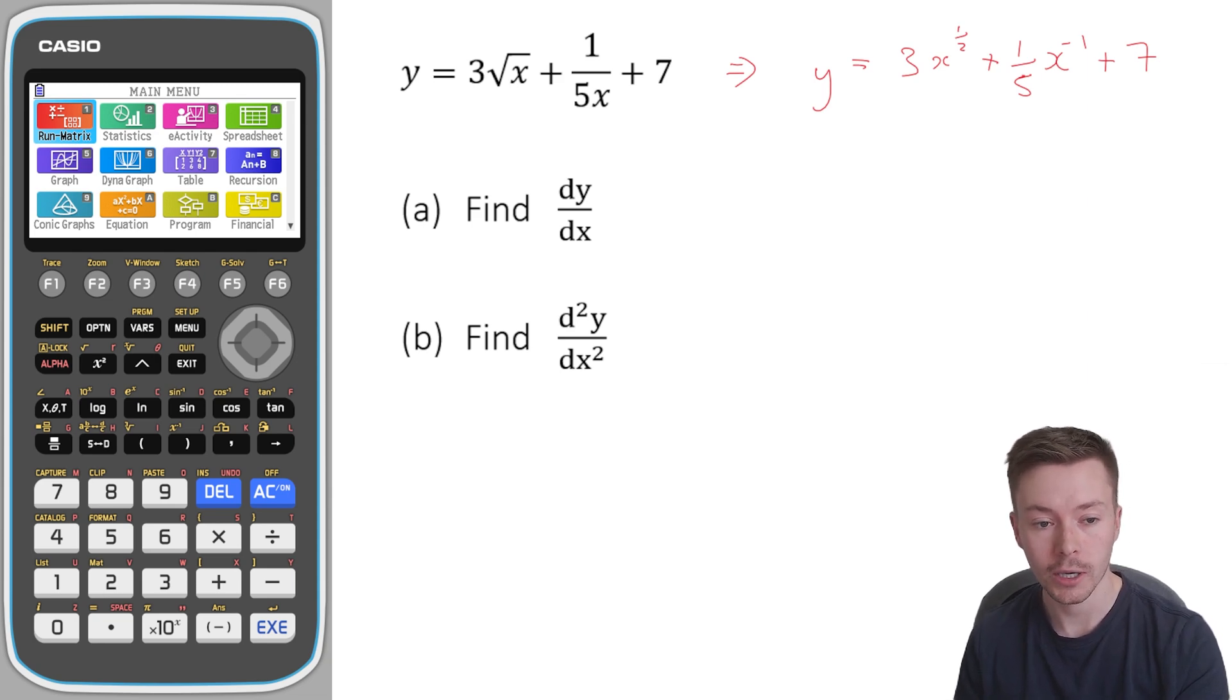Now I'm going to differentiate this. So I'm going to work out dy by dx. That is the notation for differentiation. Let's differentiate y with respect to x. What I'm now going to do to differentiate this, I'm going to multiply by my power. So I'm going to do 3 multiplied by a half, which gives me 3 halves, or 3 over 2, x to the power of, now you take away 1 from your power, so minus a half. Now the next bit is 1 fifth times negative 1, which will give me minus 1 fifth x to the power of negative 2. And if I differentiate a numerical term, a purely numerical term, I'm going to get 0. So that plus 7 will disappear.